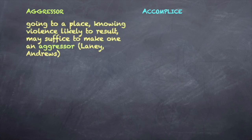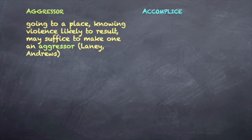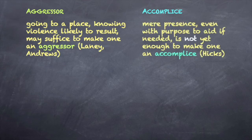Aggressor doctrine can be contrasted to complicity doctrine. Going someplace with knowledge of the likelihood of violent consequences is enough, under Laney, to deprive the defendant of the privilege of using deadly force in self-defense. So also, in the Andrews case on page 928, it matters not that the defendant's presence was not illegal, nor does it matter, under Andrews, that the defendant's purpose was innocent. But mere presence with intent to help or encourage is not enough, under Hicks, to amount to aiding or abetting.